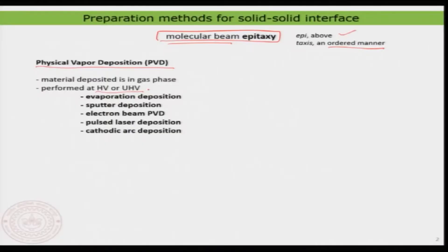We look at two different major methods that people generally use in making these kinds of add layers, or finally, when you put many add layers together, a thin film on top of a surface. The most general and simplest method is something known as physical vapor deposition or PVD, and it is done either in high vacuum or in ultra high vacuum chambers.